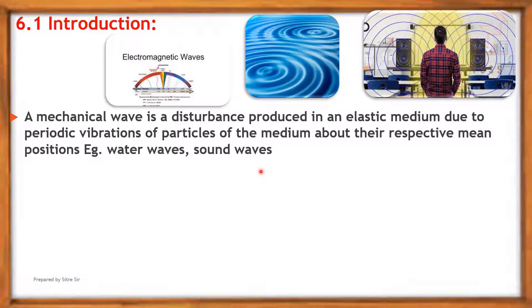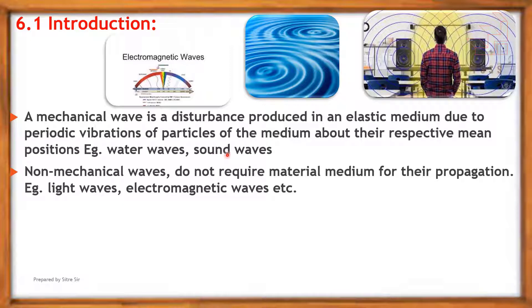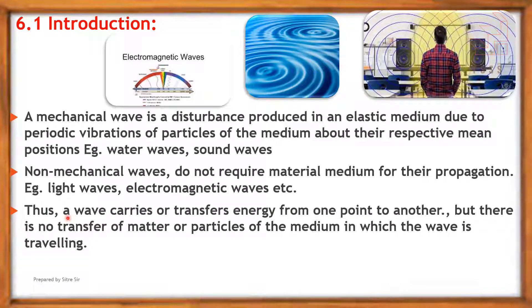A mechanical wave requires a medium to travel. The second type is the non-mechanical wave. Non-mechanical waves do not require a material medium for their propagation. For example, light waves and electromagnetic waves. Thus, a wave carries or transfers energy from one point to another, but there is no transfer of matter or particles of the medium in which the wave is traveling.